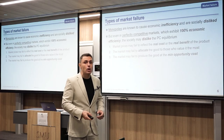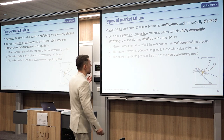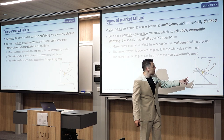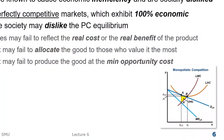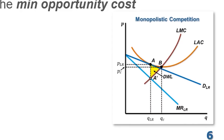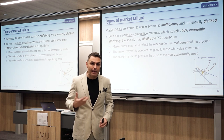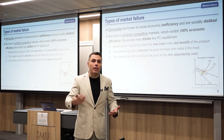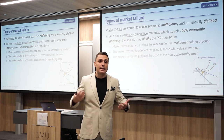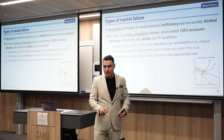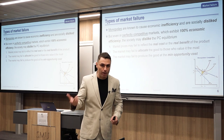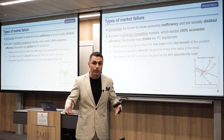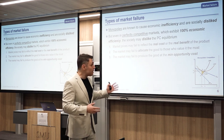The third type of market failure is that the market may fail to produce the good at the minimum opportunity cost. From last time's graph on monopolistic competition, we saw that the market should go to point B for maximum efficiency, but instead goes to point A because firms have excess supply. This means you are not producing at the minimum opportunity cost. Usually this is small and regulators have more serious problems to deal with, but it is still a problem.